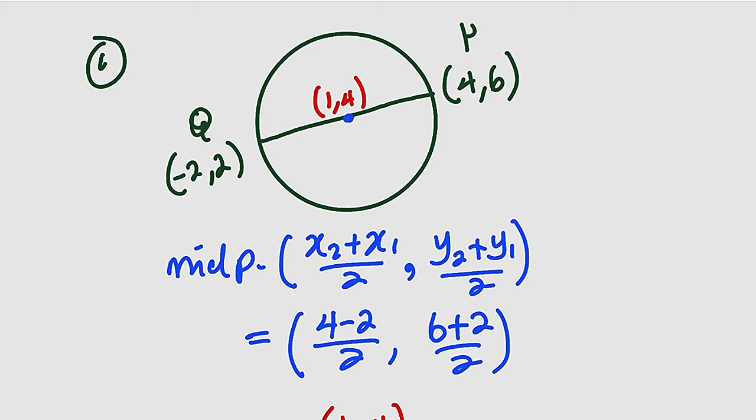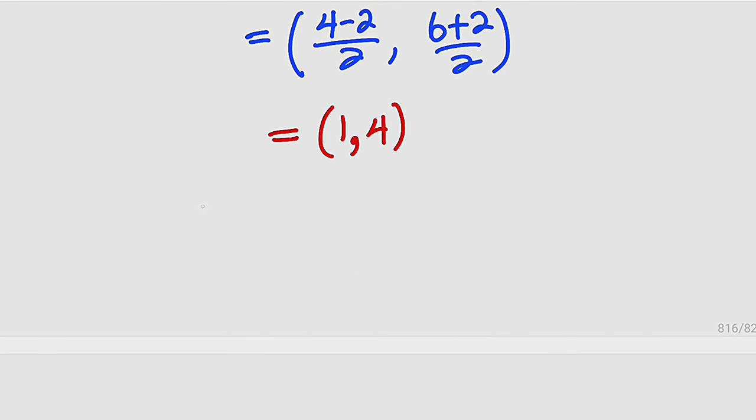Next, we need to find the radius. And you know that radius is just the distance from the center to any part of the circumference. So we can find the distance from Q to the center or from the center to P, they're all the same. So let's use from the center, which is C, to the point P. So the center has the coordinate (1,4), and we want to see the distance from C to P, which has the coordinates (4,6).